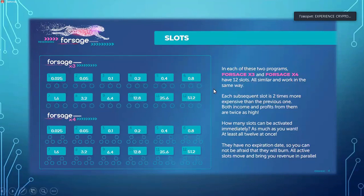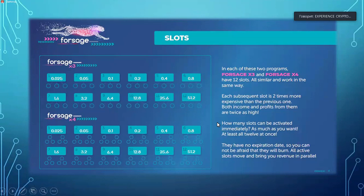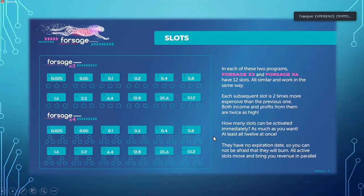In each of the two programs — Forsage X3 and Forsage X4 — there are 12 slots that work in the same way. Each subsequent slot is double — two times more than the previous slot. As you upgrade and move through, you pay double what the previous income slot was. All slots can be activated, but they must be activated chronologically — going from income slot one to two, then three, then four. You cannot jump from slot one up to five without purchasing the previous income streams.